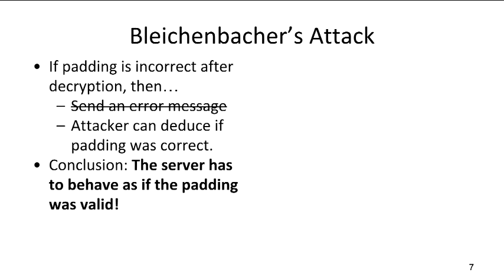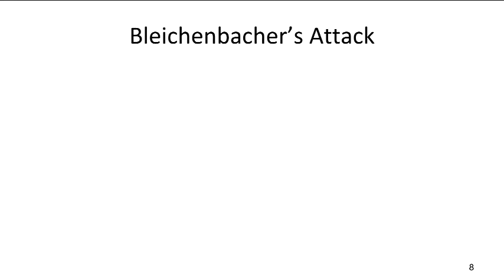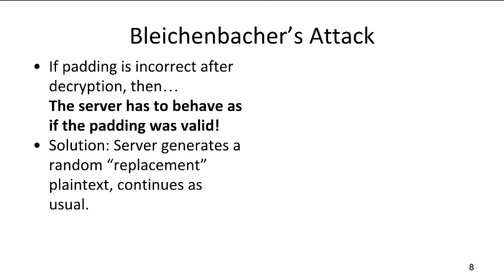So the conclusion — and if you tuned out for a couple of minutes, this is a good time to get back — is that the server has to behave as if the padding is valid, even if it's invalid. The server has to hide whether the padding was valid or not. How do we do this? If the padding is valid, great — we continue with the handshake. If the padding is invalid, the server will generate a random replacement for the unpadded RSA data, forget anything out of the ordinary happened, and just continue with the handshake as usual.